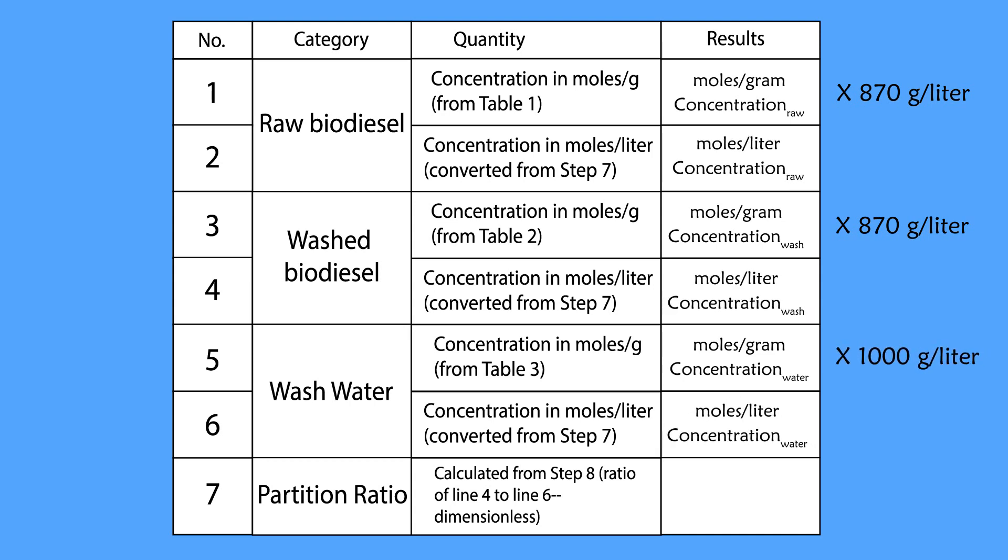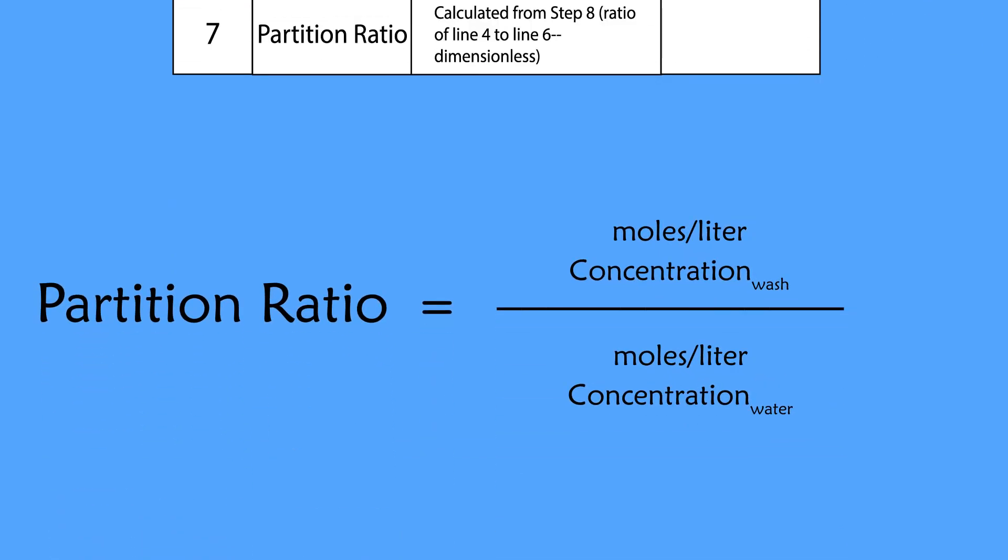Record the converted concentration in moles per liter from the recorded data and calculate the partition ratio by using the following formula and record the calculated partition ratio into the data table.